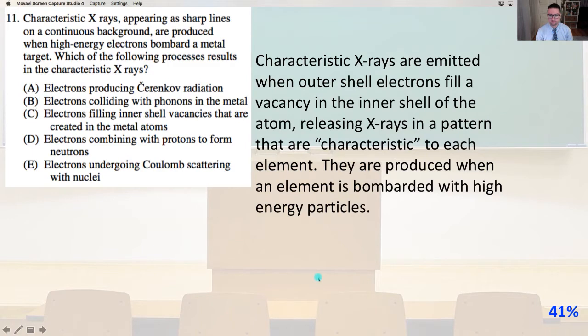Characteristic X-rays are emitted when outer shell electrons fill a vacancy in the inner shell of the atom, releasing X-rays in a pattern that are characteristic to each element. They are produced when an element is bombarded with high energy particles. And so that is answer C.